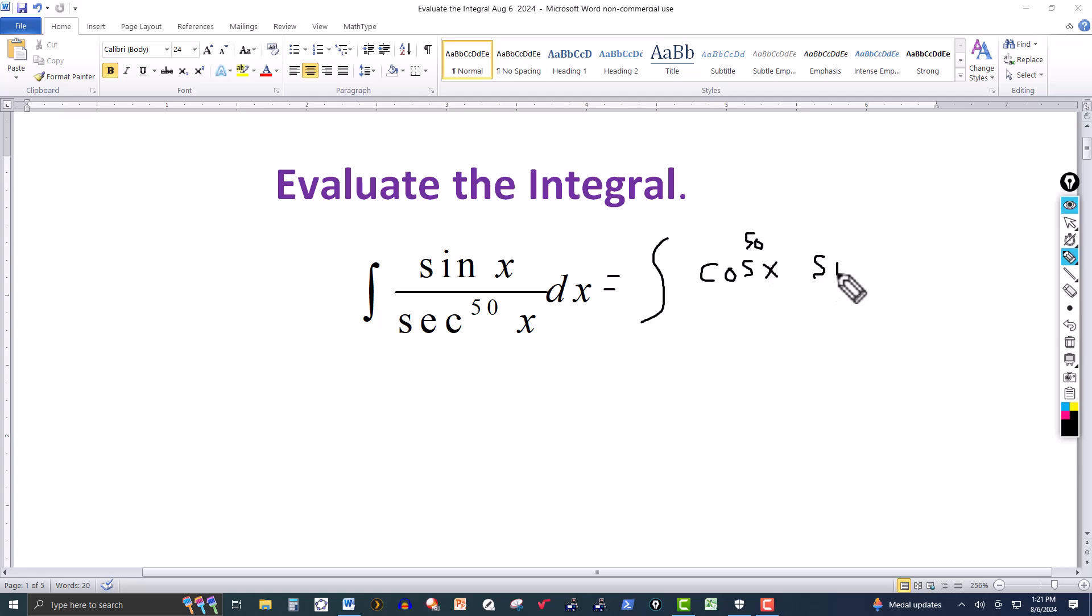And we know the derivative of cosine is minus sine, so this suggests a u-substitution.